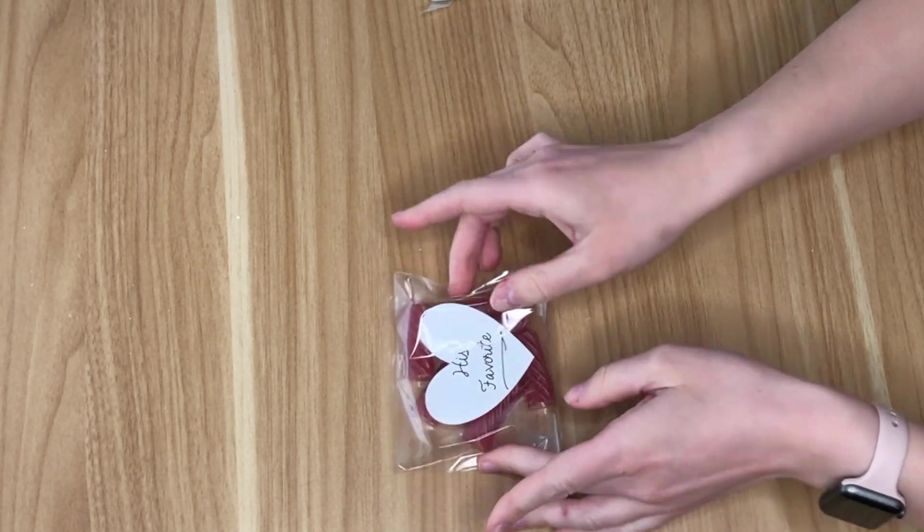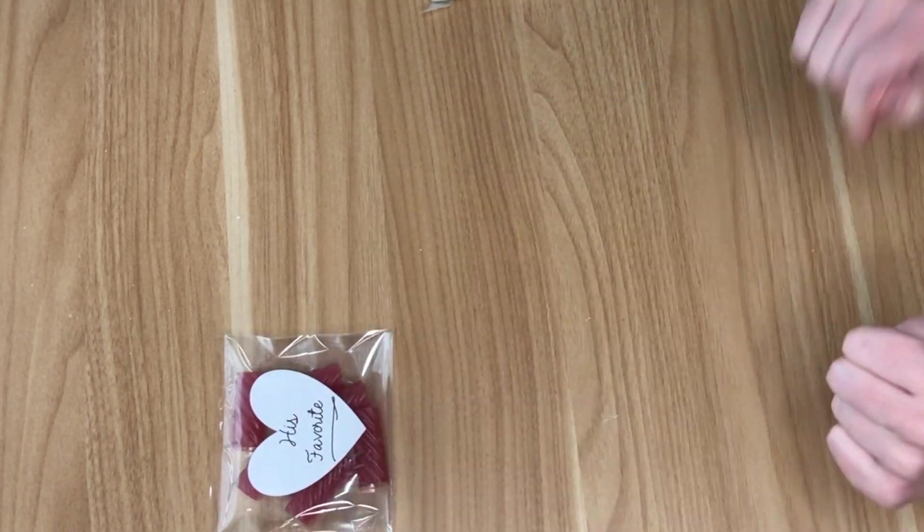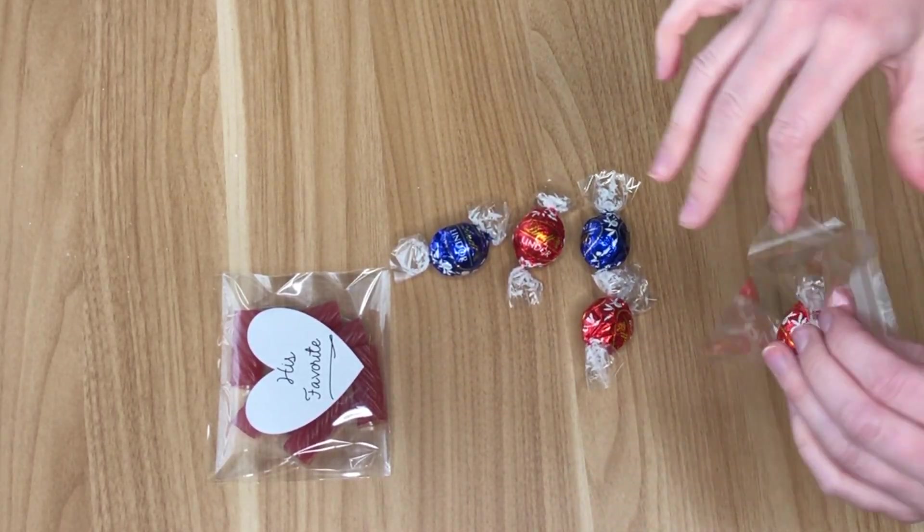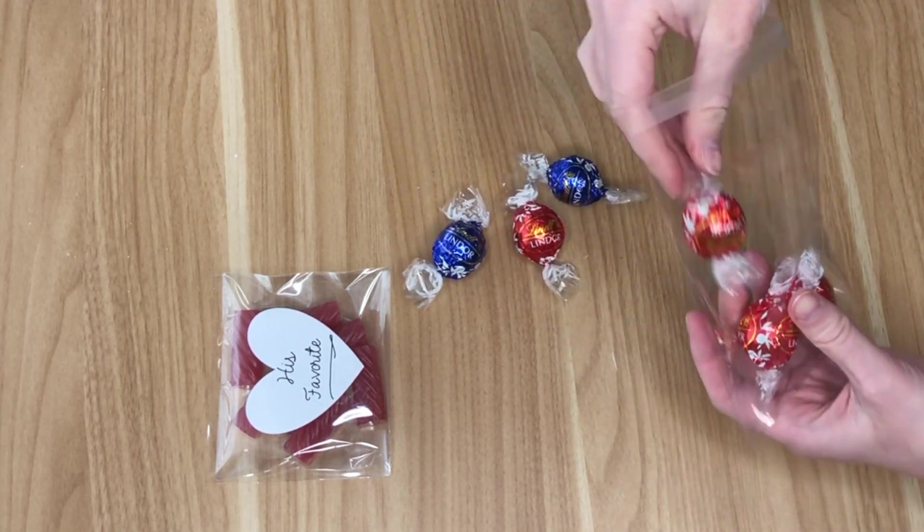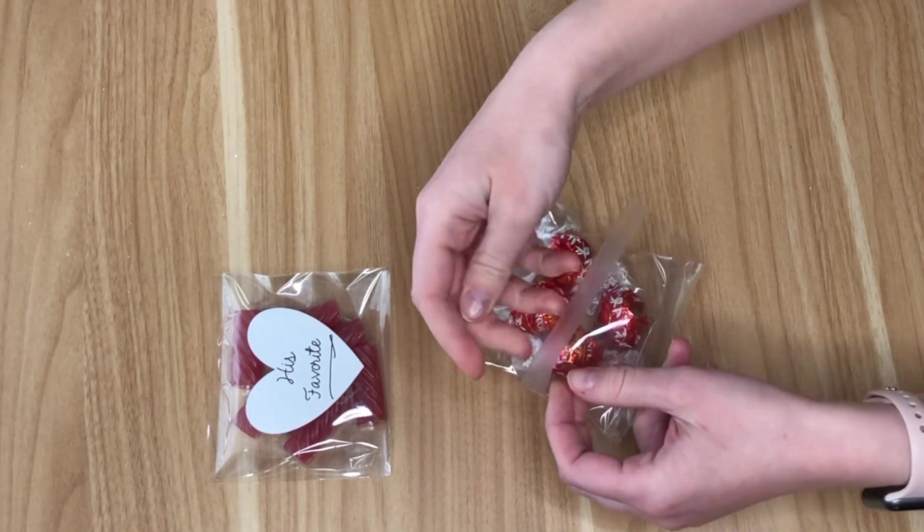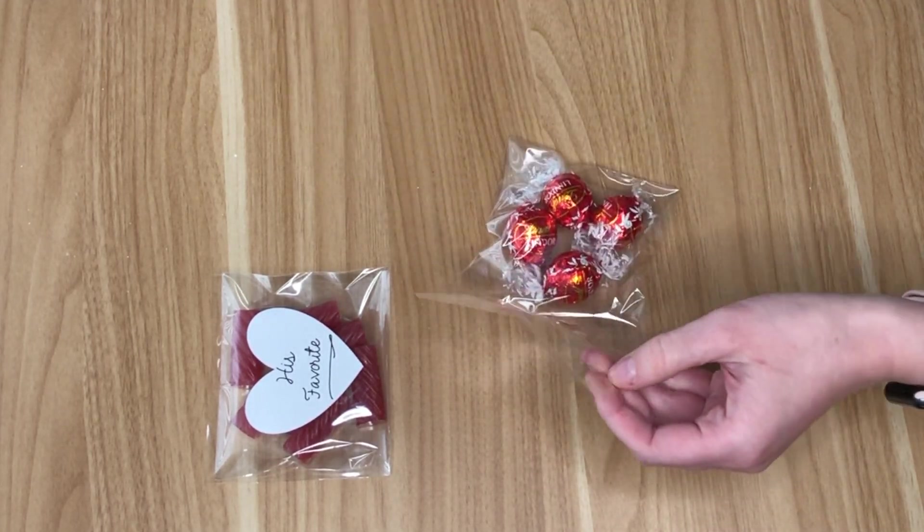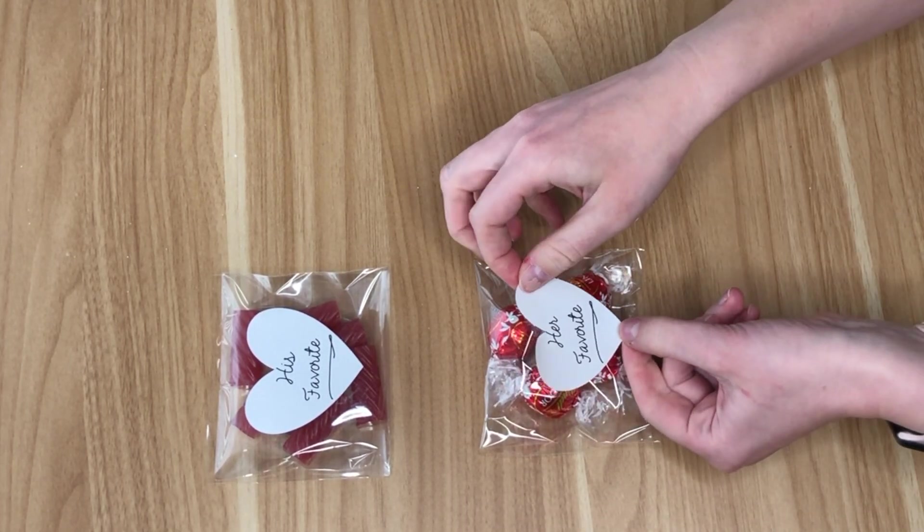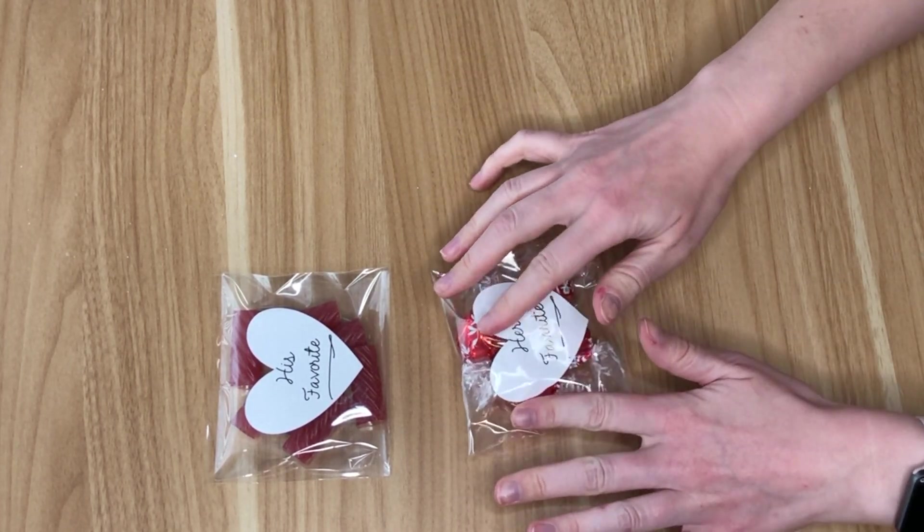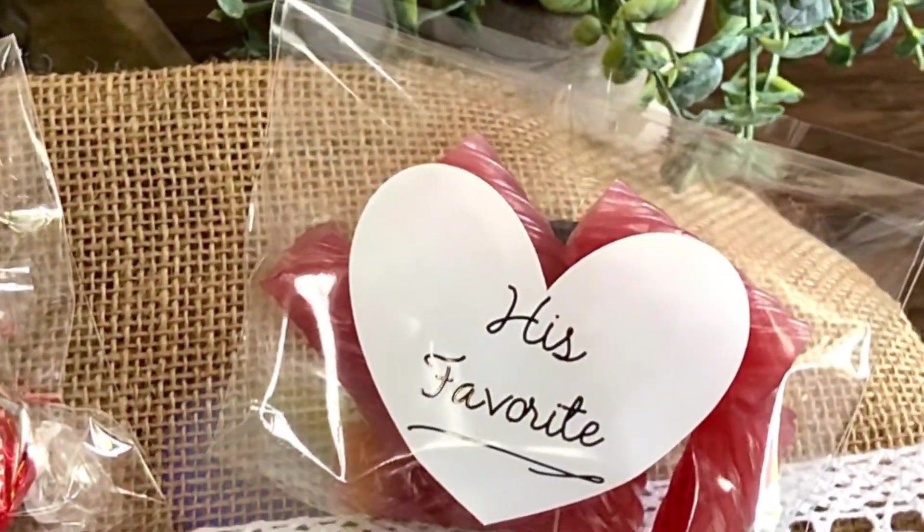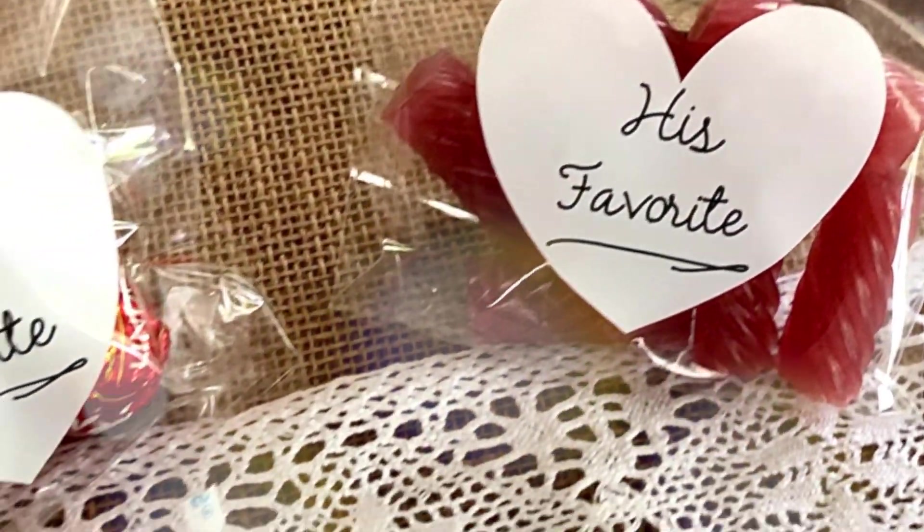Again, I will link these clear bags in my Amazon favorite shop because I use them for quite a few DIYs. Then I just cut out some hearts out of sticker paper and wrote his favorite and her favorite. For the her favorite, I'm using Lindt chocolates. And again, I think the pre-packaged candy might be the better way to go. But if you want to actually be accurate and truly give his and her favorite, then you might be limited on your options. But I thought these were just such a cute little item. If you do have them as favors at your wedding, you can have guests either pick both or pick what their favorite out of the two is.